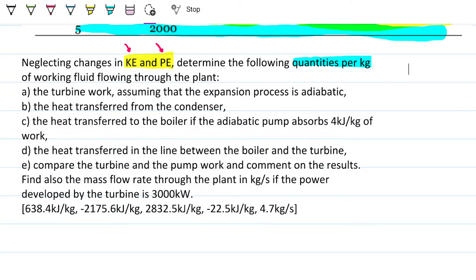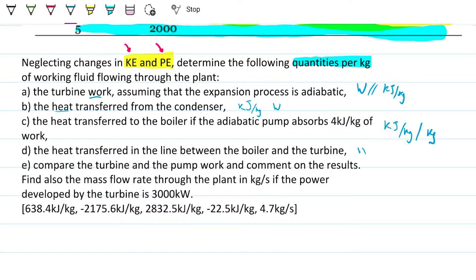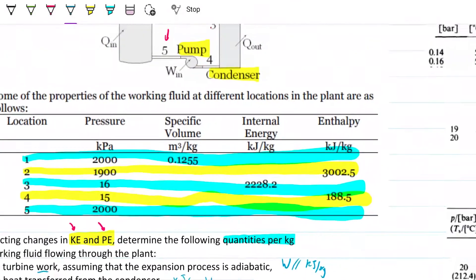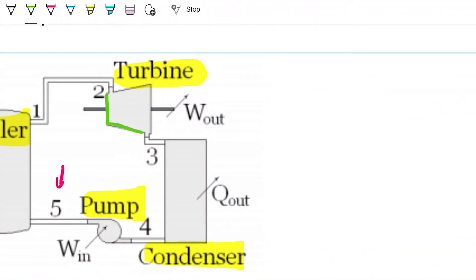The units needed are: work in kJ/kg or watts, heat transfer in kJ/kg or watts depending on whether a mass flow rate is given, and mass flow rate in kg/s. For part (a), turbine work assuming adiabatic expansion: we're going from state two to state three through the turbine.